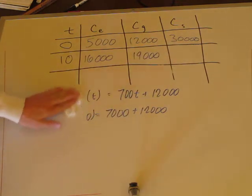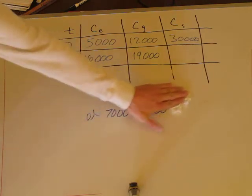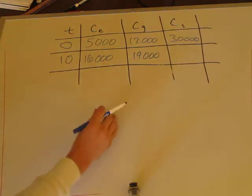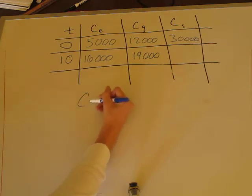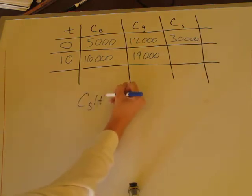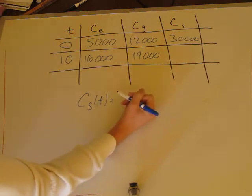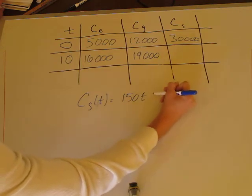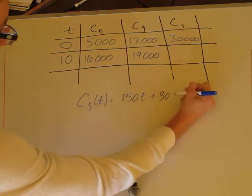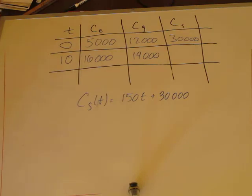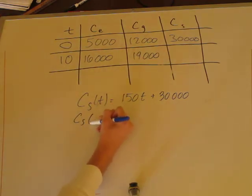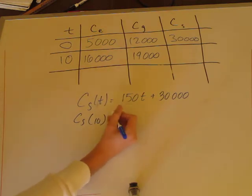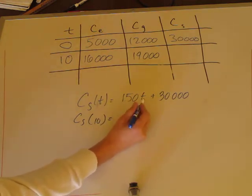Lastly, let's look at the solar power system. Based on time, it's $150 per year plus your initial cost of $30,000. So after 10 years, you have $150 per year for 10 years, which is $1,500, plus $30,000, giving $31,500 for solar after 10 years.